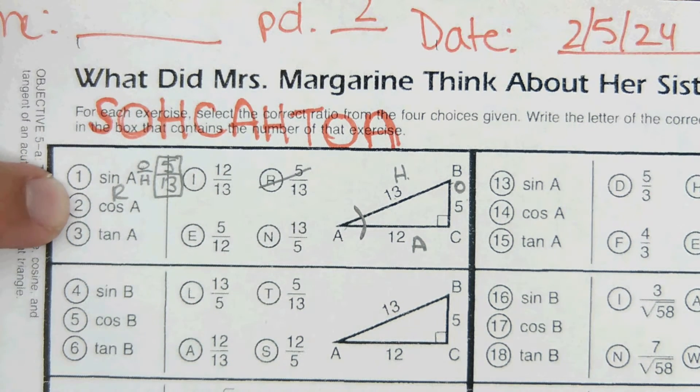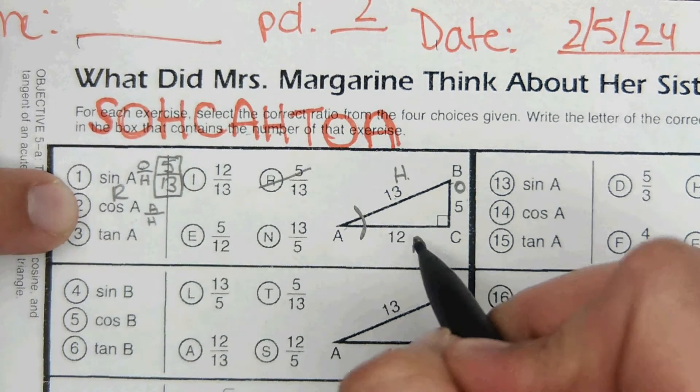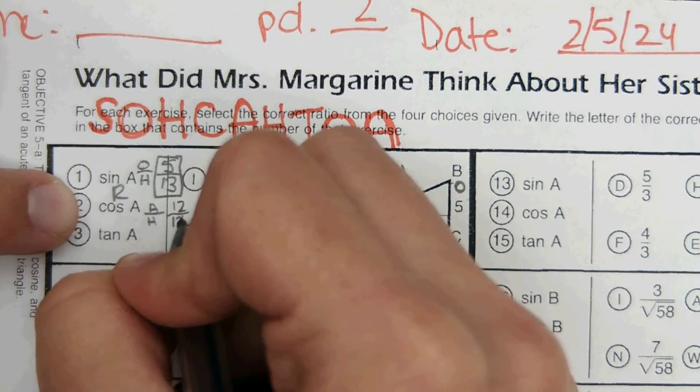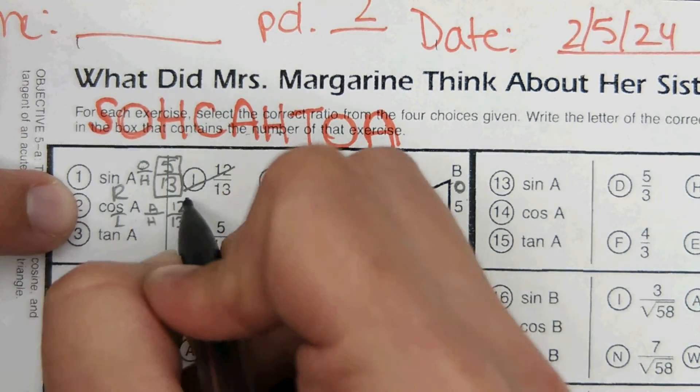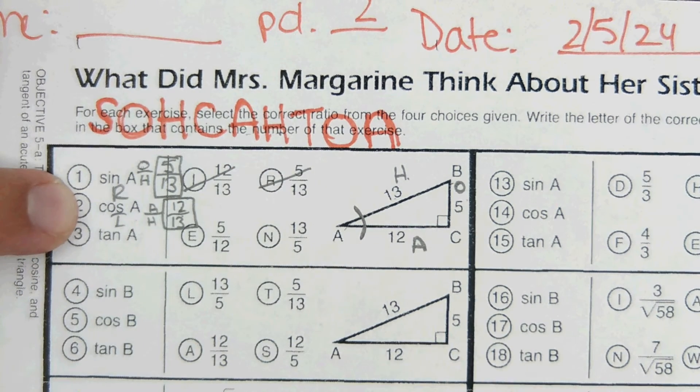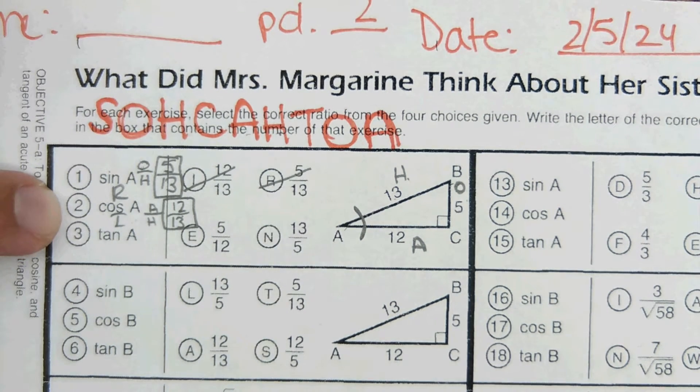Then cosine of A, cosine is A over H, 12 over 13, which is I. So 2I on the puzzle below.